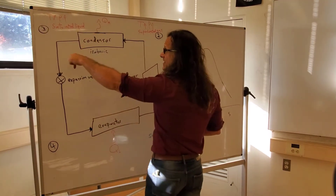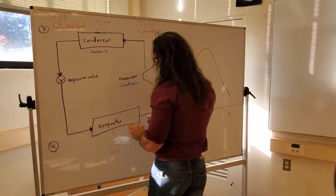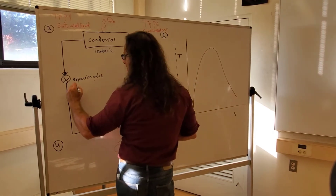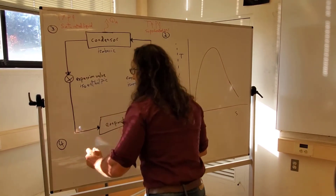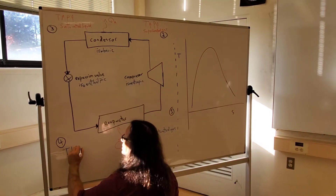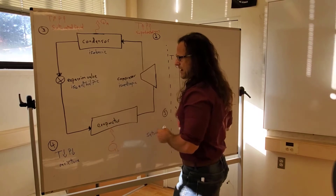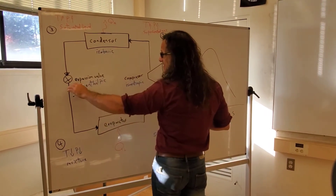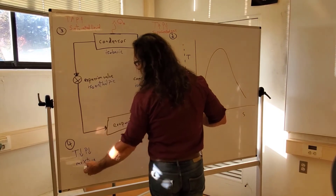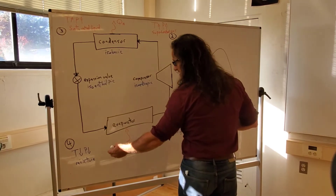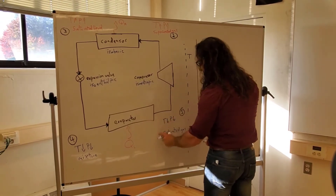That saturated liquid comes through the expansion valve. Just like all nozzles and expansion valves, on one side you have high pressure and on the other side low pressure. This is a special expansion valve designed to be isentropic. Out of it we're going to have a low temperature, low pressure mixture. As this saturated liquid expands, it's lowering in temperature and pressure, coming up into a saturated mixture — somewhere between a saturated liquid and a saturated gas. Then we add QL into it to turn this low temperature, low pressure mixture into pure gas.